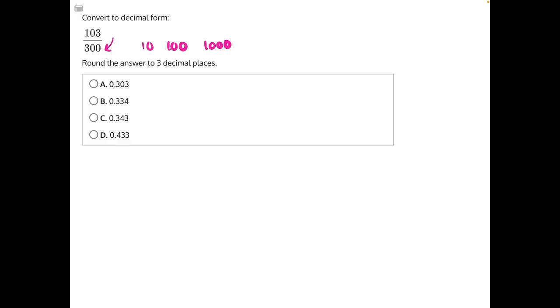However, 300, we can't multiply 300 by anything to get 1,000 evenly. So another strategy we can use is splitting up our numerator. So we can split it up into 100 plus 3, instead of 103, over 300.